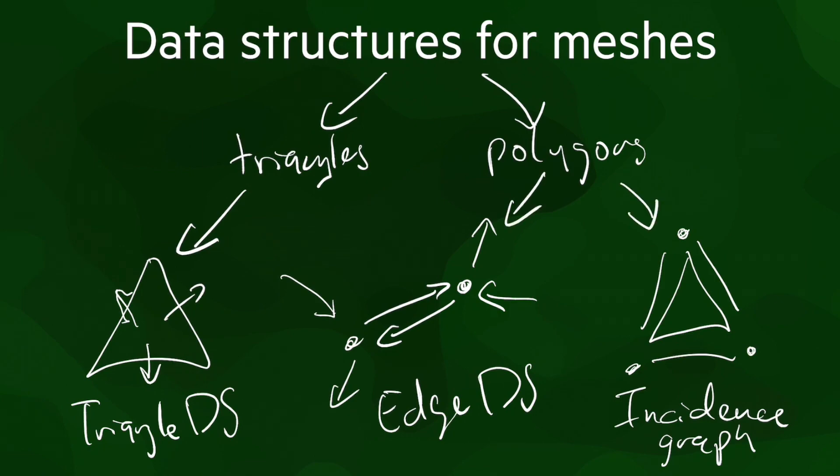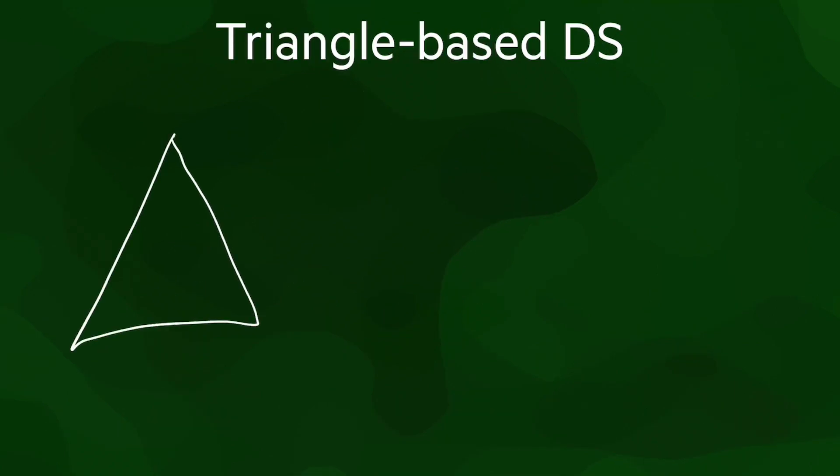Let's have a quick look at each of these. In a triangle-based data structure, each triangle has links to its three adjacent triangles and to its three incident vertices. In an implementation, it might look something like this.